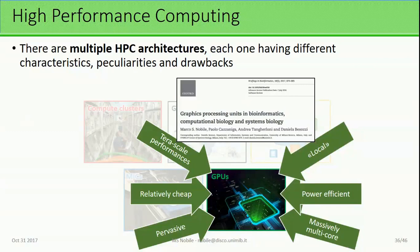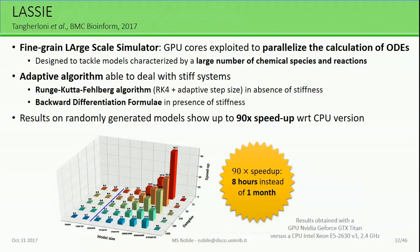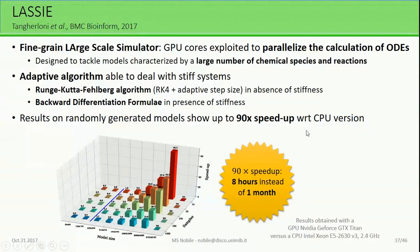We focused on GPUs for our implementations. LESI is a fine-grained large-scale simulator that uses the GPU to distribute the calculation of a single simulation — a single fitness evaluation — using thousands of cores. This allows us to simulate models with thousands of reactions or thousands of chemical species. Our method is adaptive and can deal with stiff systems, achieving approximately 90 times speedup relative to the CPU for very large-scale models.